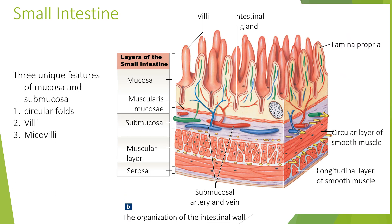There are three unique features of the mucosa and the submucosa. You can see in the diagram the organisation of the intestinal wall — the mucosa, the muscularis mucosa, the submucosa, muscular layer, and the serosa. The three unique features of the mucosa and submucosa are circular folds, villi, and microvilli.